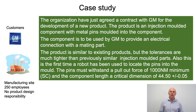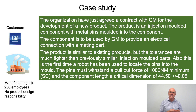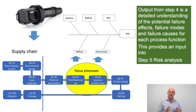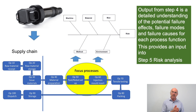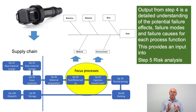To make this video series practical we've been working with a case study. This is a GM product — an injection molded component with metal pins that will provide a connection to a GM mating part. We're proposing to use a robot to locate pins into the component. The team has a good understanding of the proposed process flow, honing in on operation 60 and understanding the 4M influence on that process step. In step four we identified the potential failure effects, failure modes, and failure causes for each of the process functions, which provides an input into step five, risk analysis.